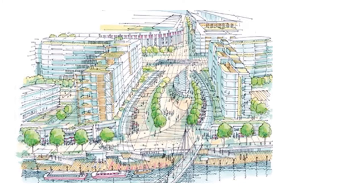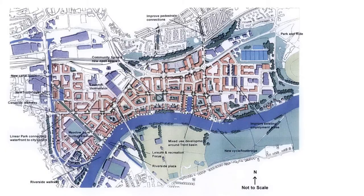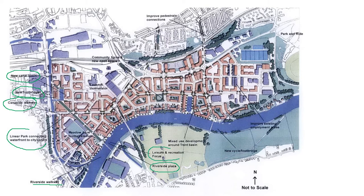This is an artist's impression of what they wanted to turn the area into — obviously just a drawing, not a photo. Here are some more plans with different units they've got. You might notice arrows pointing to things like a riverside walkway all along the edge of the river — nice for an evening stroll — a linear park connecting the waterfront to the city centre, a canal-side walkway so people can walk into town, new footbridges to make it more accessible, and a new canal basin area.